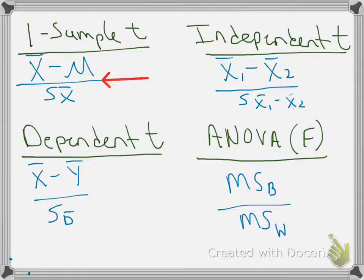What that tells us is how big is the observed difference between the means relative to the amount of difference I would expect to get between means just due to random sampling. So in this case we have one sample mean, and we have the standard error of the difference between one sample mean.